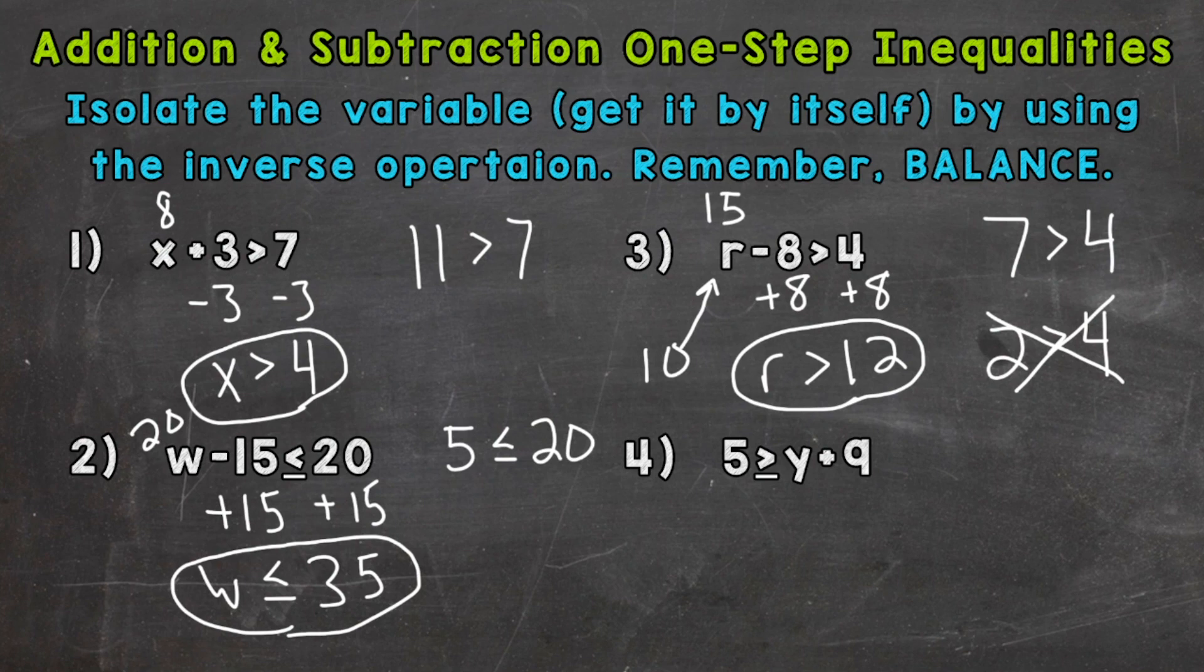And lastly, number 4, we have 5 is greater than or equal to y plus 9. So we need to isolate the y. We're adding 9. So the opposite or inverse would be subtract 9. So let's subtract 9 from both sides. The y is now isolated. And 5 minus 9 is negative 4. So negative 4 is greater than or equal to y.